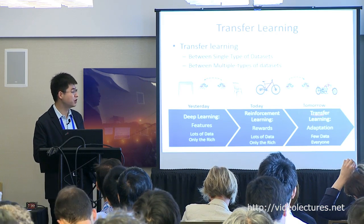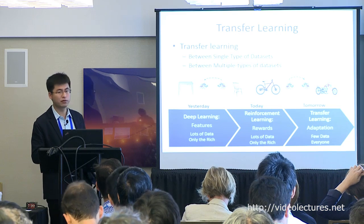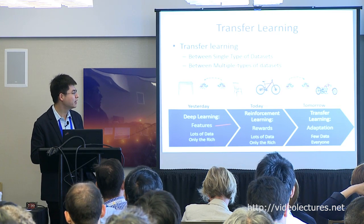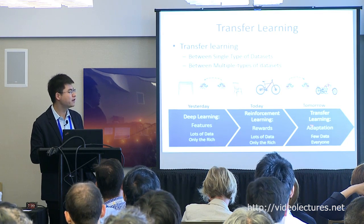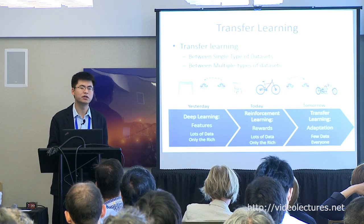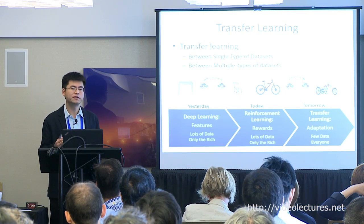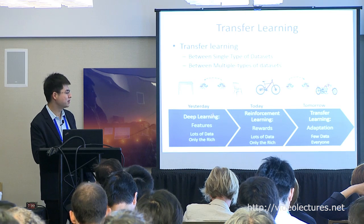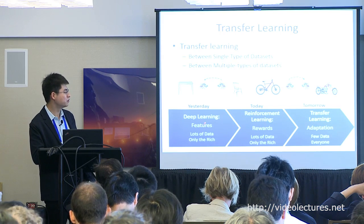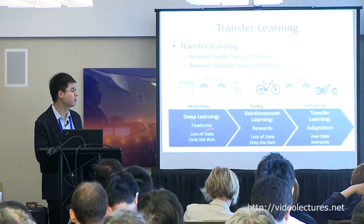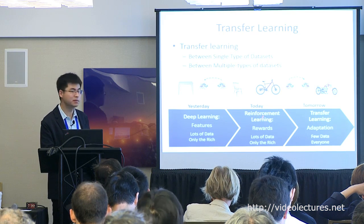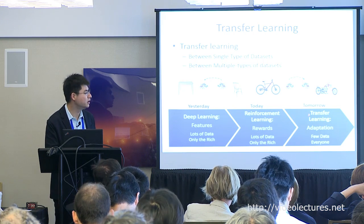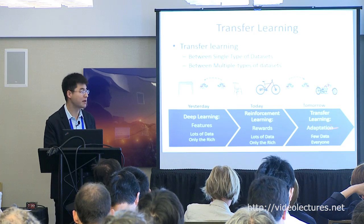Professor Yang Qiang from Hong Kong University of Science and Technology said: transfer learning is the future of machine learning, solving the model adaptation problem. Deep learning was about solving the feature representation problem, and reinforcement learning solves the reward problem — while transfer learning solves the adaptation problem of how to adapt the model learned from one place to another.